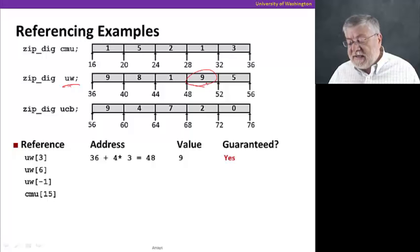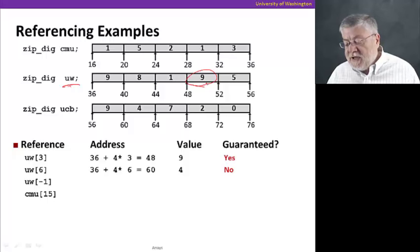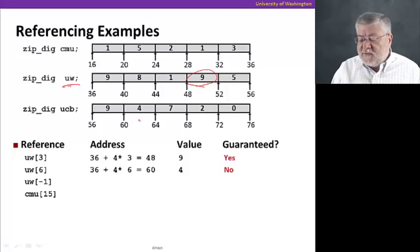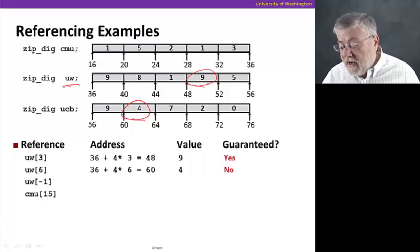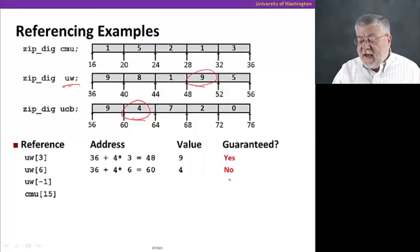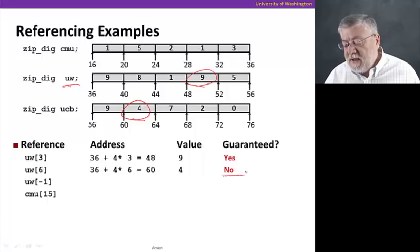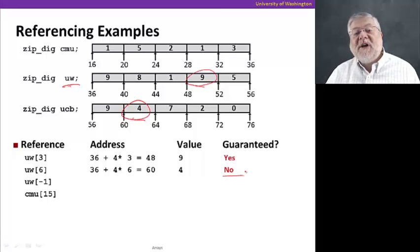Let's try UW six. That is off the end of our array. We don't have a seven element array. We have a five element array. But the address computation proceeds as before. This time, we get an address of 60, which happens to have the value four in it. But you'll notice that it's really part of the UCB array. There is no guarantee that that array is in the location that I've shown it to be in. It could have been allocated anywhere in memory. That's absolutely not a guaranteed result.